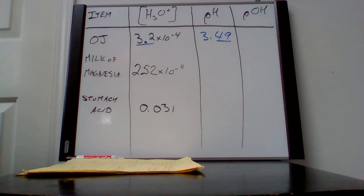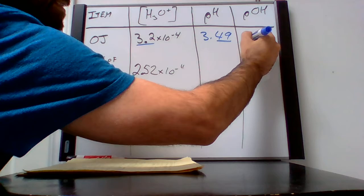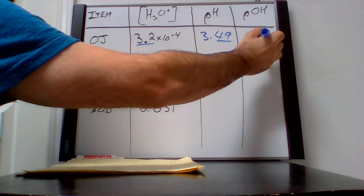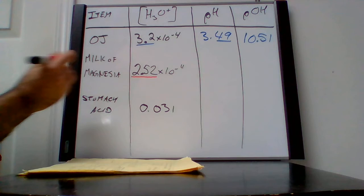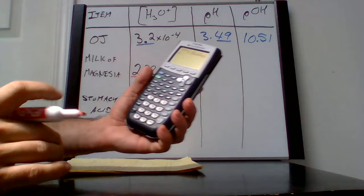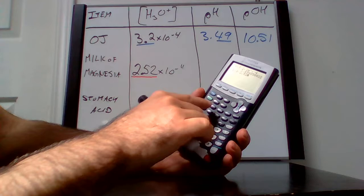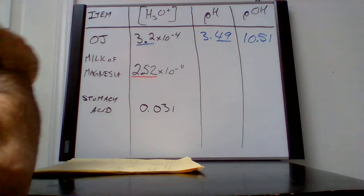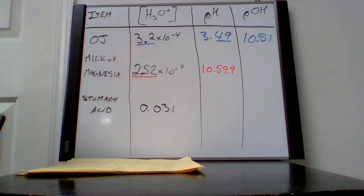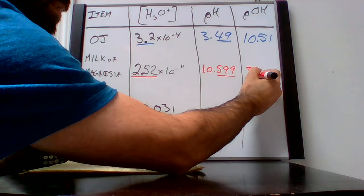Two sig figs means two decimal places, so pH is 3.49. Subtracting from 14 gives a pOH of 10.51. For milk of magnesia, we have three sig figs, so we need three decimal places. The negative log of 2.52 times 10 to the negative 11 gives 10.599. Subtracting from 14 gives a pOH of 3.401.